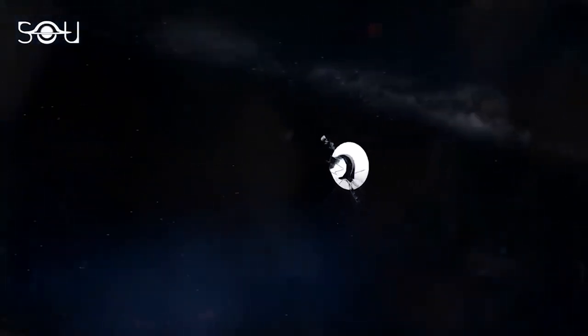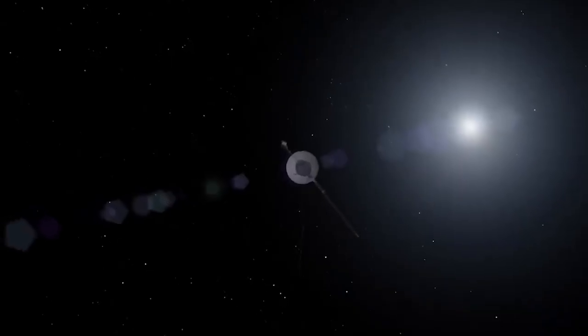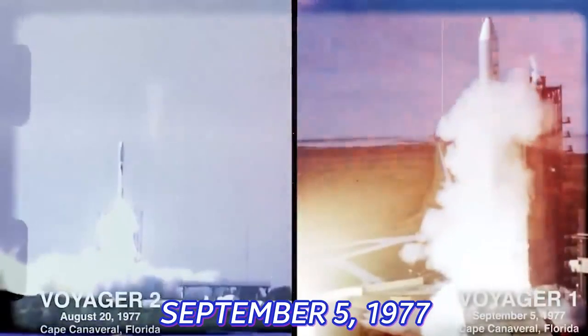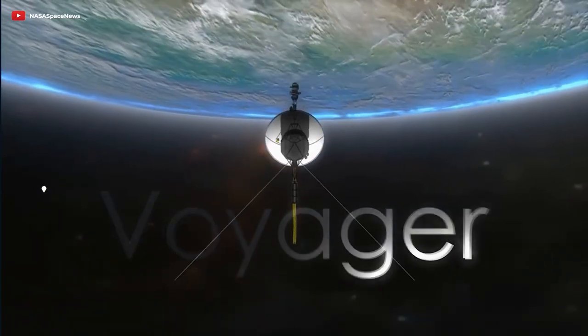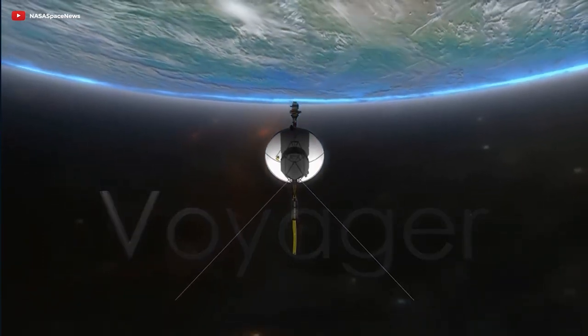In no time, you'll unearth some of the most amazing discoveries of Voyager 1. Mission of Voyager 1. On September 5, 1977, Voyager 1 was sent into space by a Titan Centaur rocket at Cape Canaveral in Florida. This event marked the beginning of the spacecraft's journey through the cosmos.